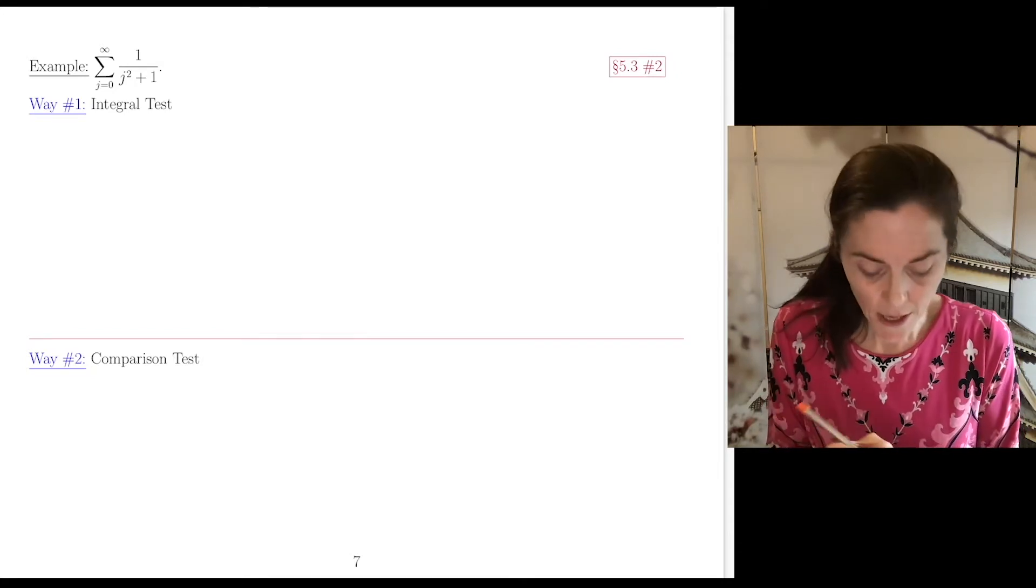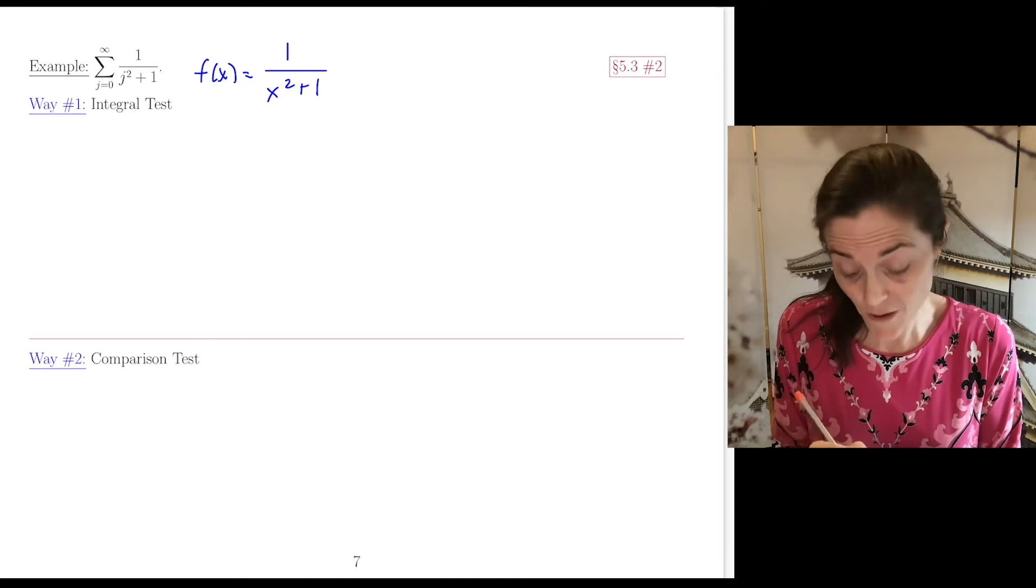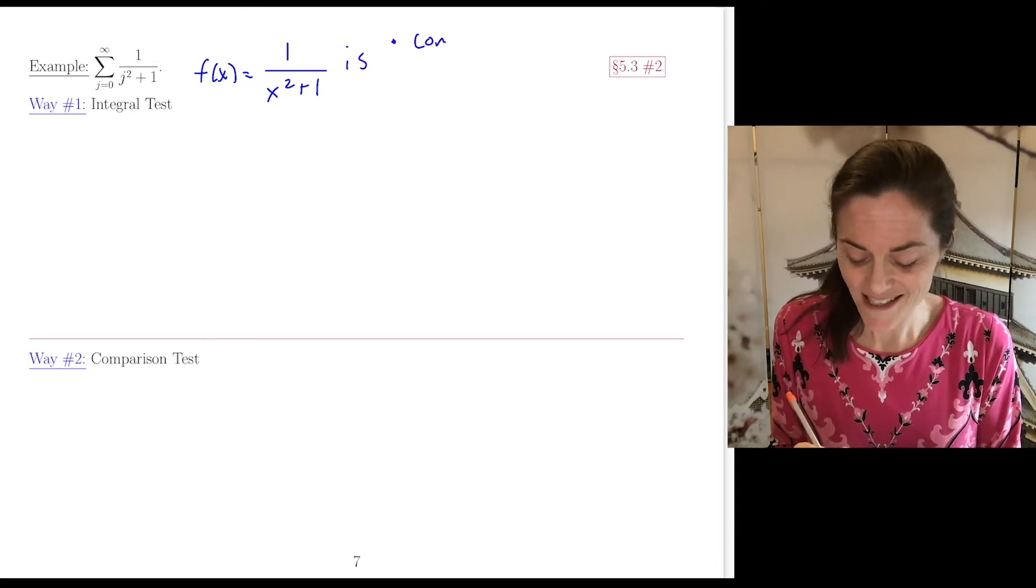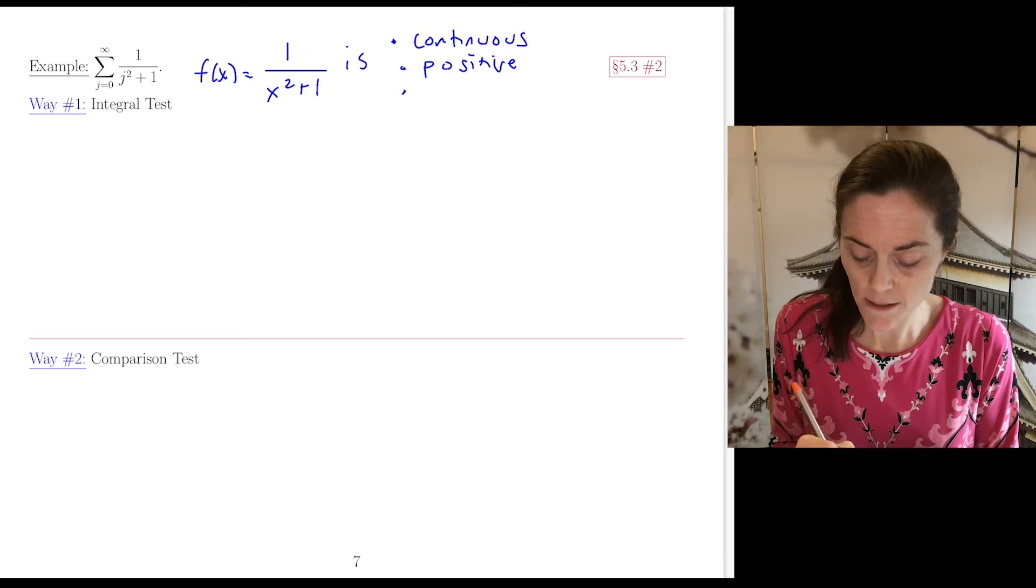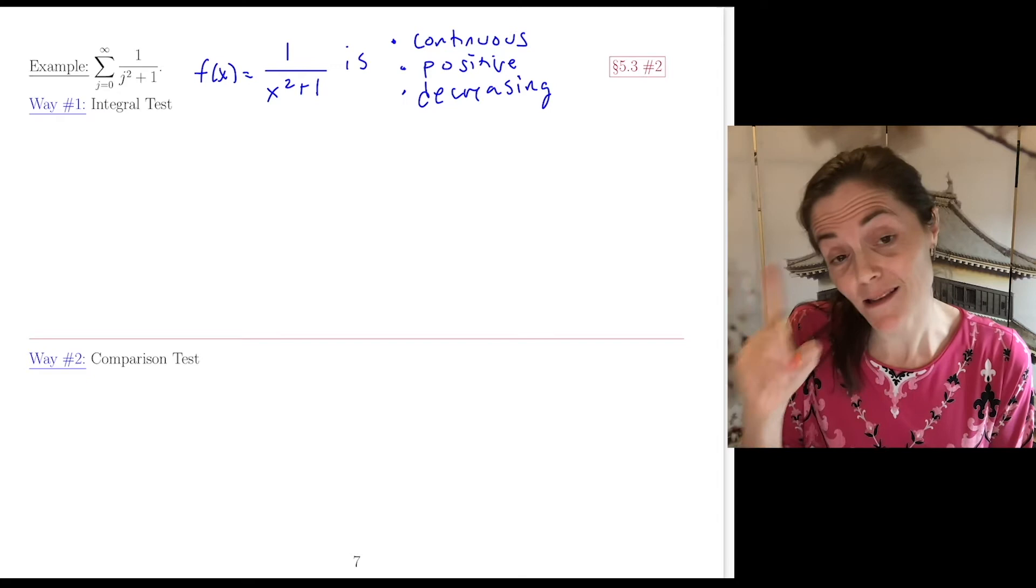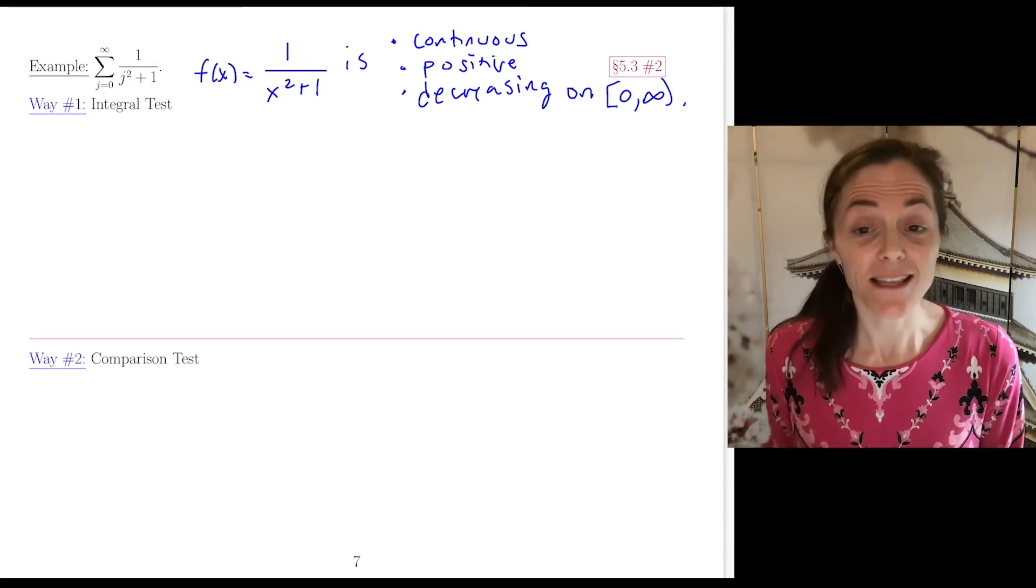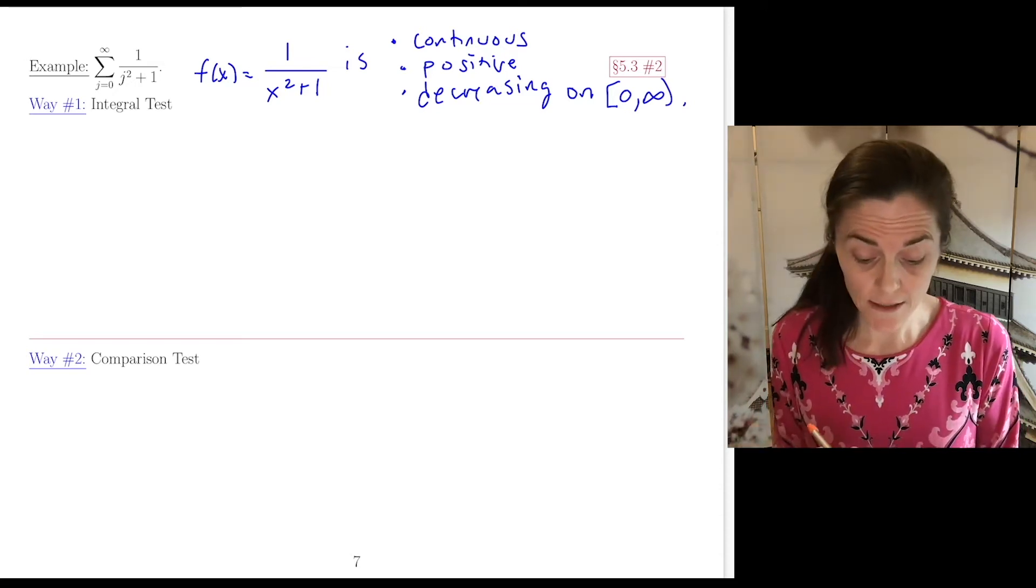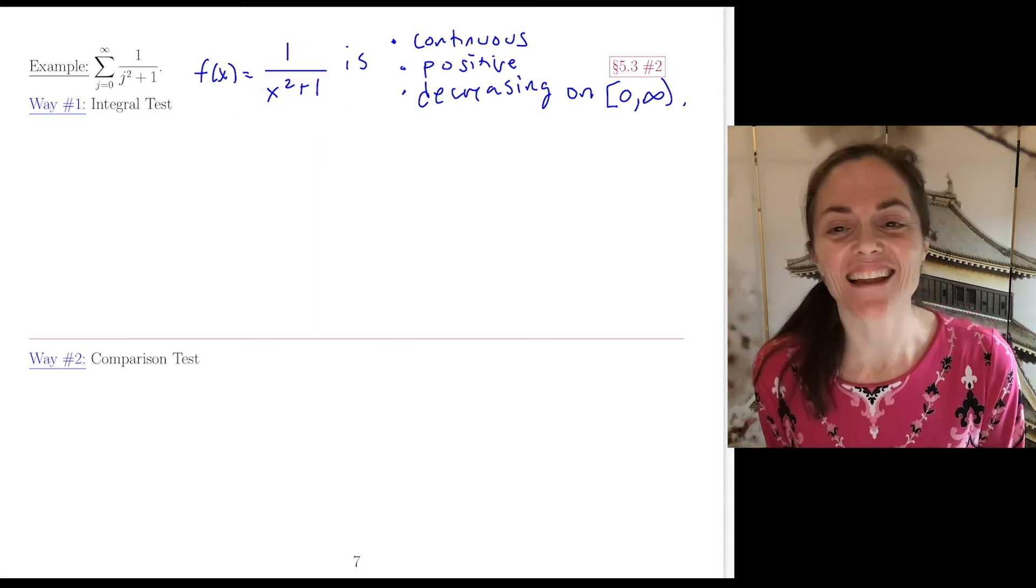First, let's use the integral test. If we take f(x) = 1/(x²+1), this function is continuous, positive, and decreasing on [0,∞). The sum starts at 0. It's decreasing because we have a fixed numerator and the denominator is growing. It's positive and continuous.